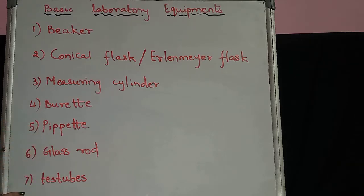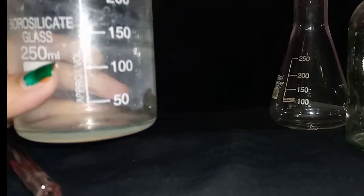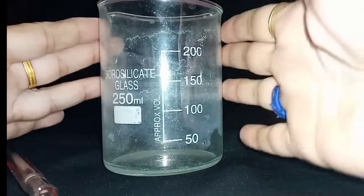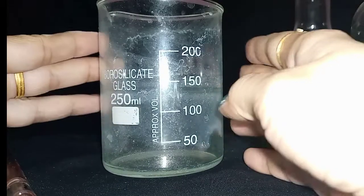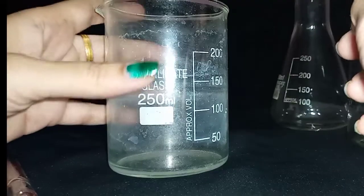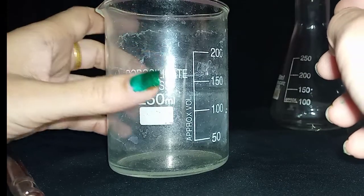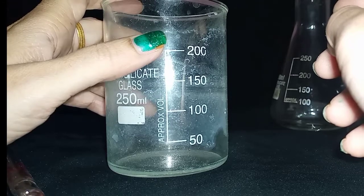The first one, here you can see, is a beaker. The beaker is made up of glass, it's parallel on two sides. It's made up of ordinary glass or borosilicate glass. Here you can see it's a measure of 250 milliliters, but we get beakers in the range of 100 ml as well as 50 ml.